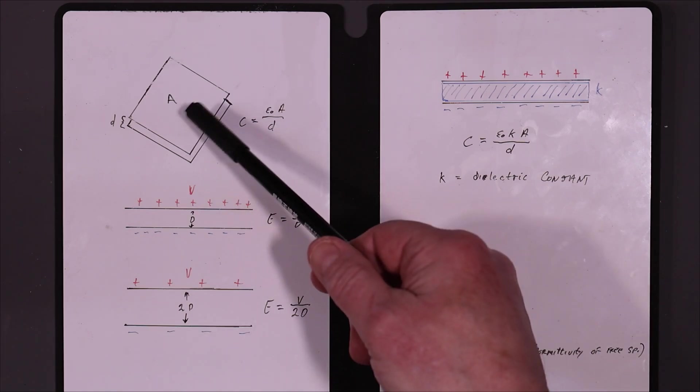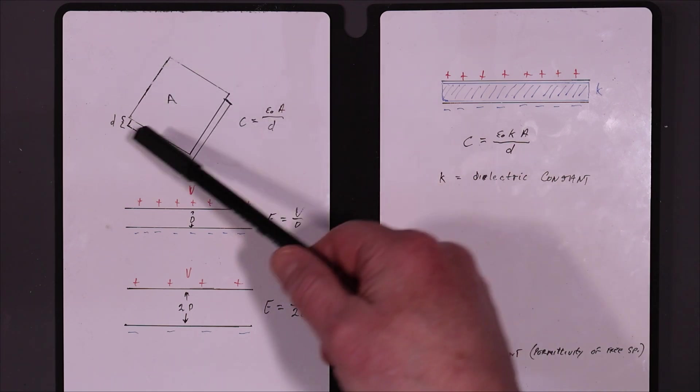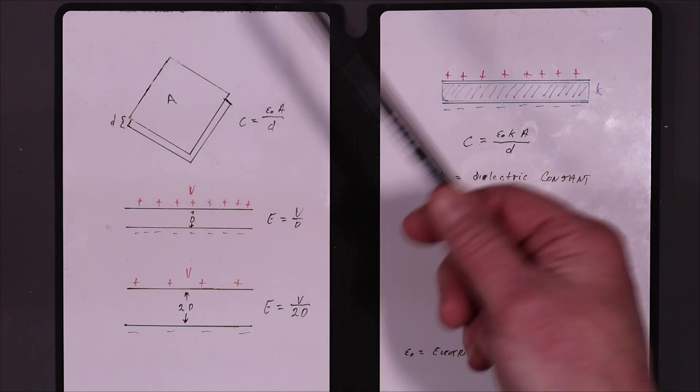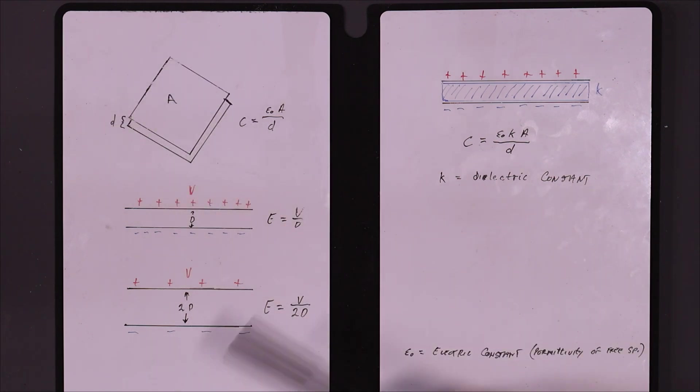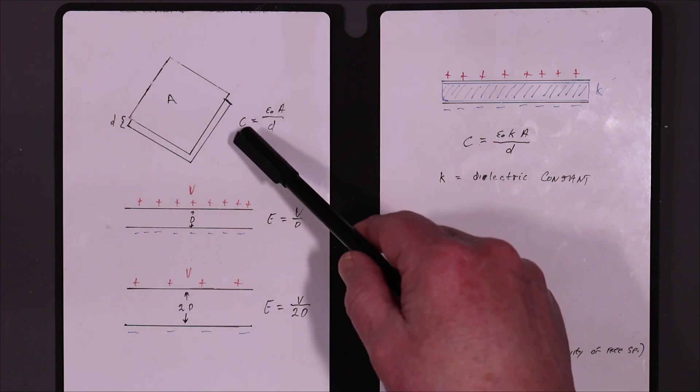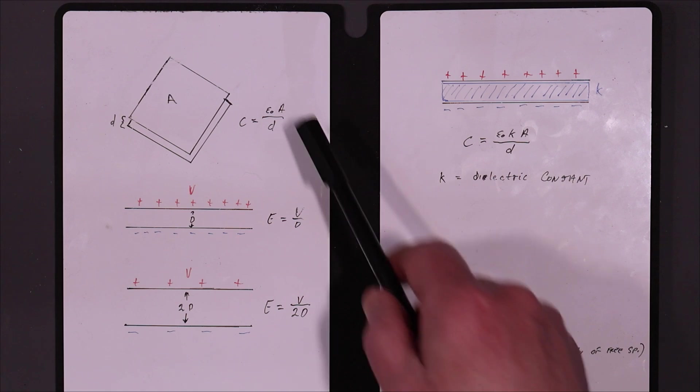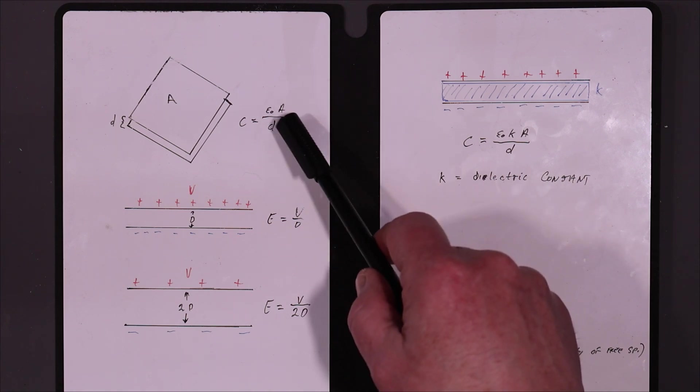If we look at a capacitor, basically it can be thought of as two metal plates of area A, with a distance between the two plates, call that D. The capacitance of a plate capacitor like this is simply E naught, the electric constant or the permittivity of free space, times A over D.